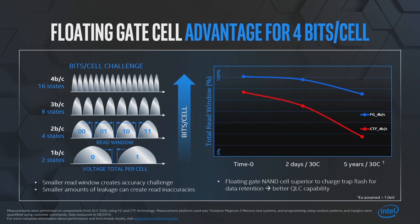I have two plots: one for floating gate technology and the other for charge trap flash. You can see that for the Intel floating gate NAND — the blue line — you are losing charge, but at a very slow rate. For the goal we usually march to of five years at 30°C, you haven't really lost too much of the metric called read window. Compare that to charge loss due to lateral dispersion in charge trap flash — well known in papers and literature — and you are actually losing charge at a very accelerated rate. Floating gate NAND cell is superior to charge trap flash for data retention, and that results in better QLC for data-centric usage.